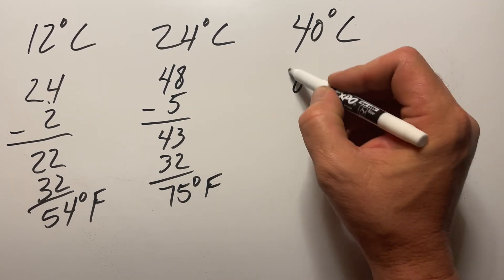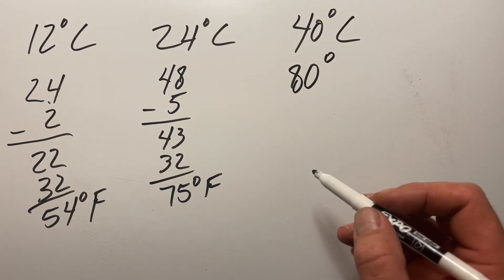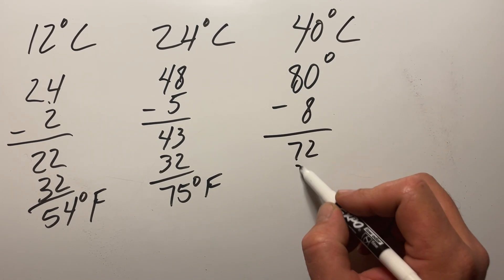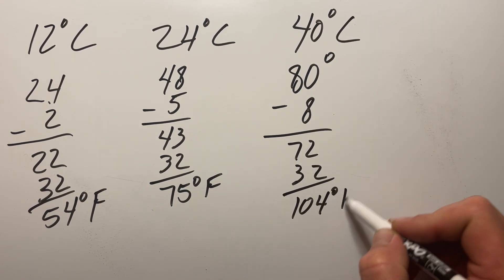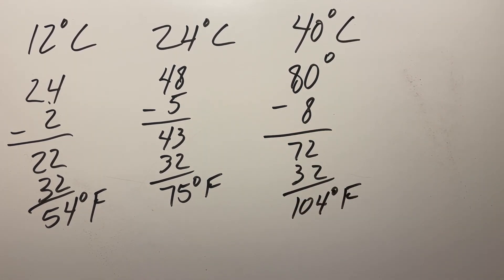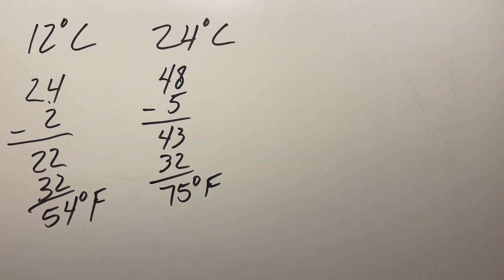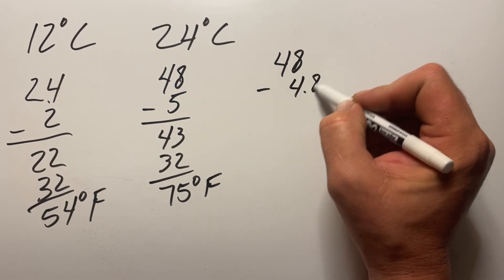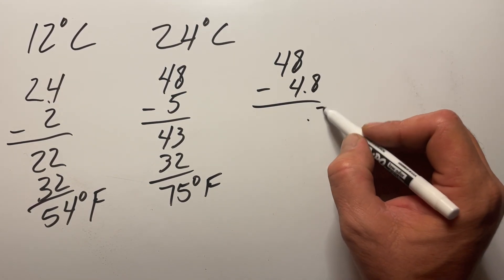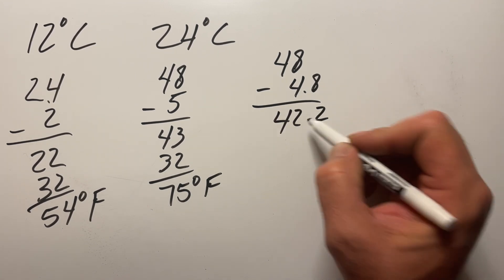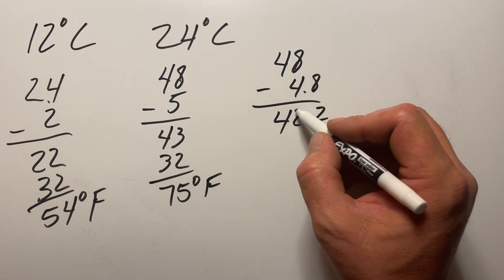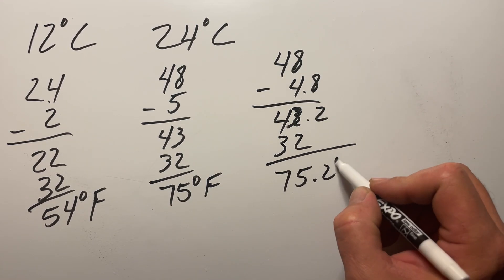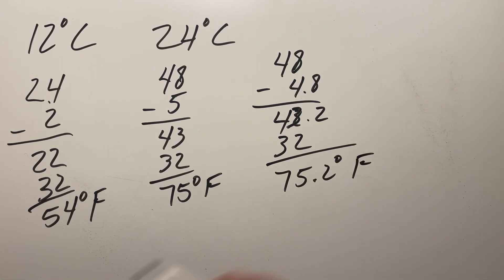Finally, 40 degrees — this one comes out 100% accurate. Double to 80, subtract 8, gives 72, add 32 — that's 104 degrees Fahrenheit. Going back to 24 done accurately: 48 minus 4.8 gives 43.2, plus 32 is 75.2 degrees. So with our estimation we are within 0.2 degrees of the actual conversion.